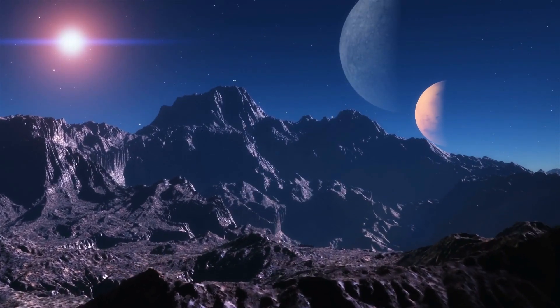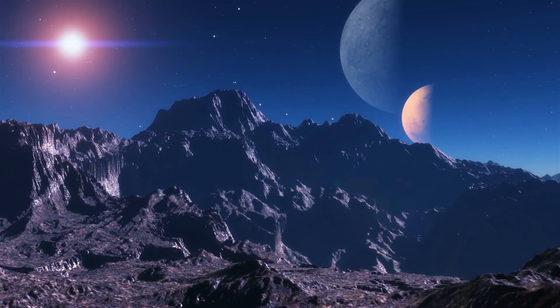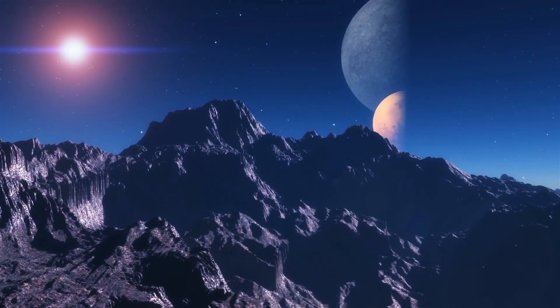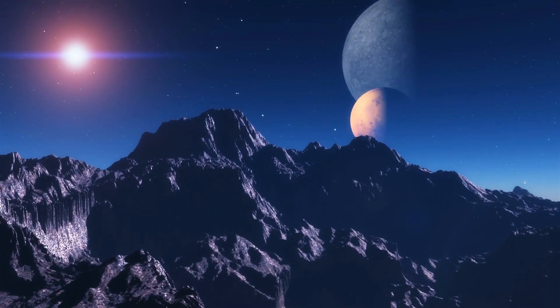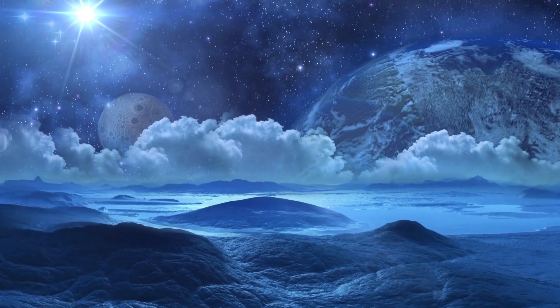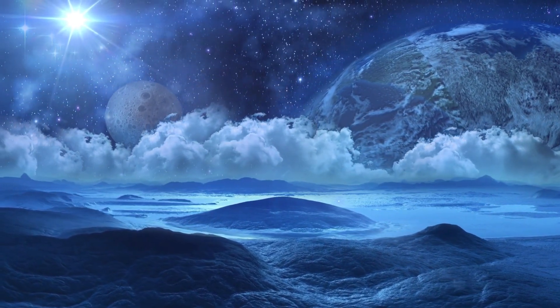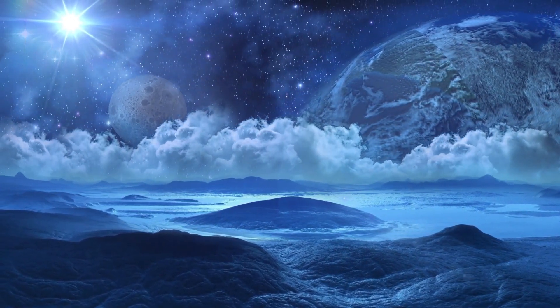Although this planet orbits very close to its star, at a distance of about 10 miles shorter than that of Mercury around our sun, due to the smaller size and lower temperature of its host star, the amount of stellar irradiation it receives is still low and could allow the presence of liquid water on the planet's surface, provided it has a sufficient atmosphere.